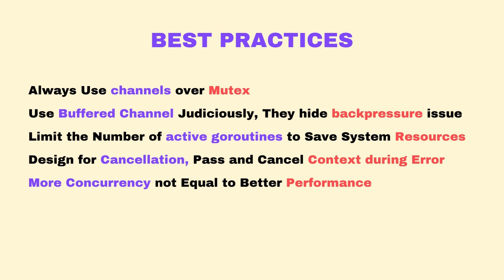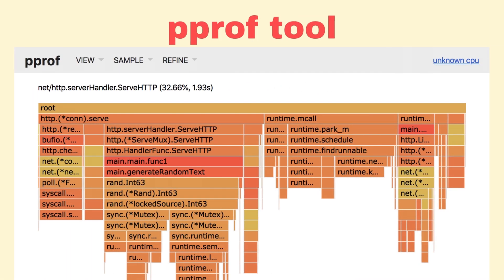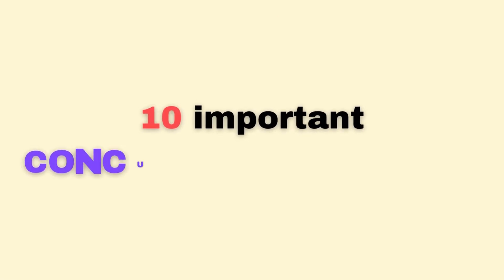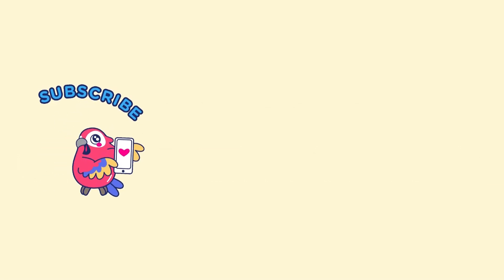Even with best practices, concurrent code can be tricky to debug. Go provides powerful tools to identify concurrency issues. The race detector is indispensable — it instruments your code to detect data races at runtime, and you should run it regularly during development as part of your CI pipeline. The pprof tool helps identify performance bottlenecks and Go routine leaks; if your service is consuming more resources than expected, pprof will help you find the culprit. Those are the 10 basic concepts of Go concurrency. Share your experience in the comments, hit subscribe, and next week I'll be diving into advanced concurrency patterns like pipelines, fan-in, and fan-out.